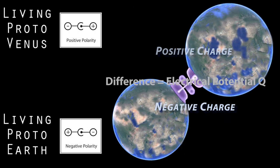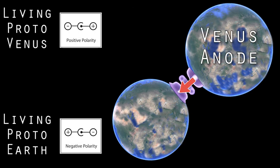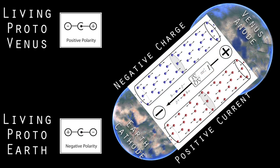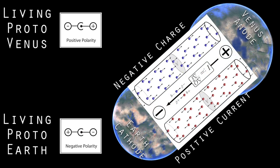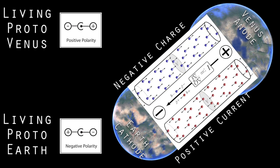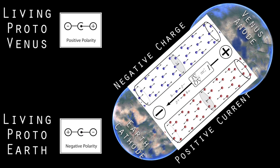In other videos, I have shown that current flowed from Venus, making it the anode, and it flowed to the Earth, making the Earth a cathode. If these two planets were plugged into a circuit and a battery added in the middle, it would be placed like this, with the Earth on the bottom and Venus on the top. A negative charge of electrons flowed from the Earth to Venus, and current then flowed from Venus back to the Earth.